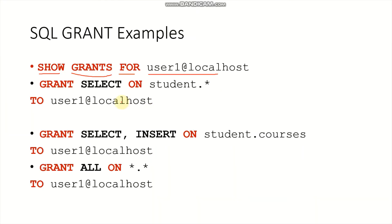The next example is to allow user1 to use SELECT queries. We can say: grant SELECT privilege on the student database — student.* means all the objects lying inside student, which can be all the tables, views, procedures, anything inside the student database — to the user user1 at localhost. Before practicing this query, we need to know about user creation.